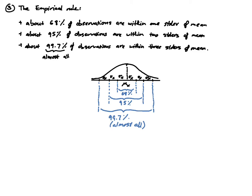Note that when we say 'within a given number of standard deviations away from the mean,' we are talking about being both smaller than the mean and greater than the mean, as indicated in the figure. So let's look at an example.